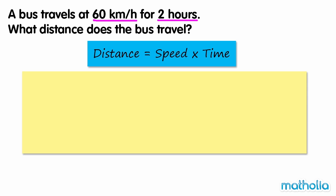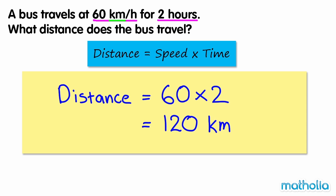Before we multiply, check that the units of time are the same in each expression. In this case, the speed and time are given in terms of hours, so we can multiply. 60 times 2 equals 120. Our distance units are kilometers, so the bus travels 120 km.